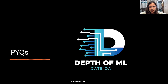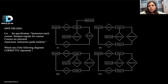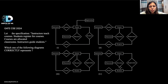Let's solve some previous year questions on the ER model. The first question is from GATE CSE 2024. The specification is: instructor teaches courses, student registers for courses, courses are allocated classrooms, and instructor guides students. Which of the following diagrams correctly represents the above specification? They have given four diagrams.